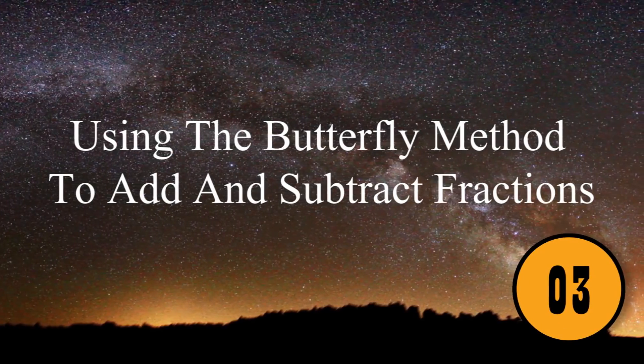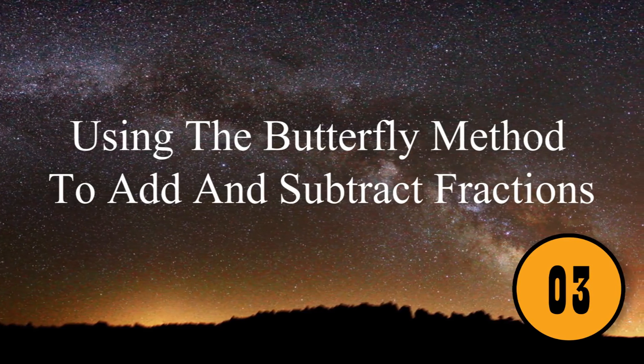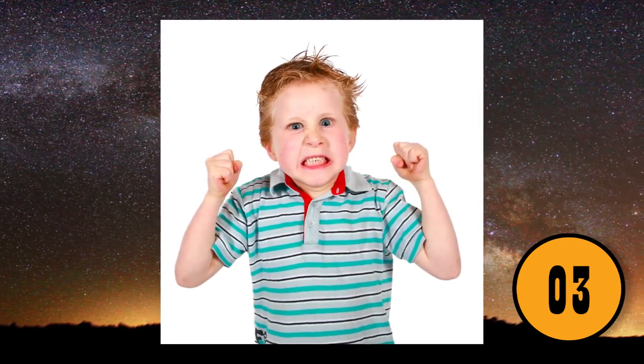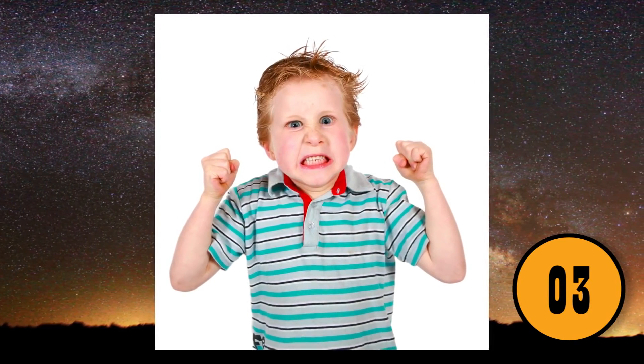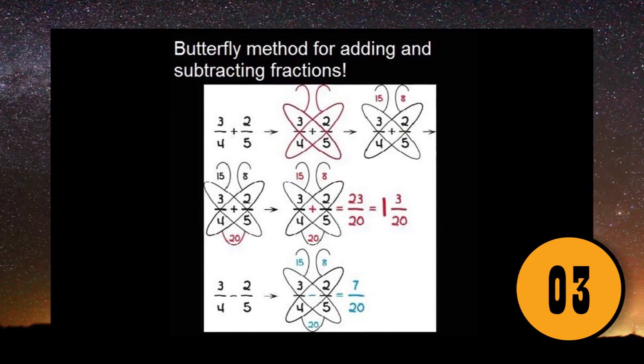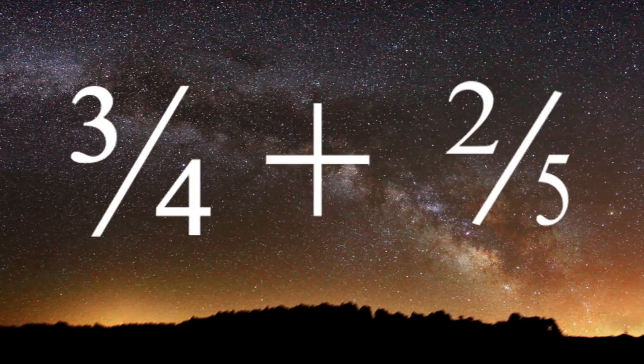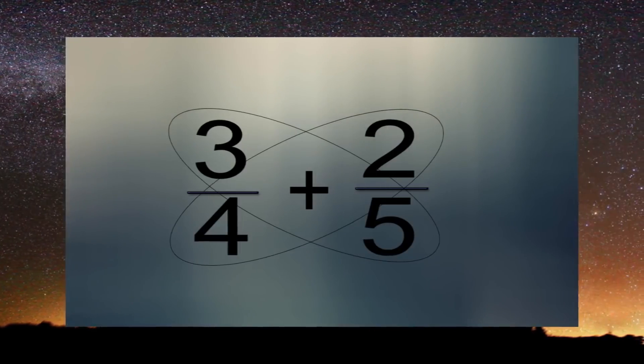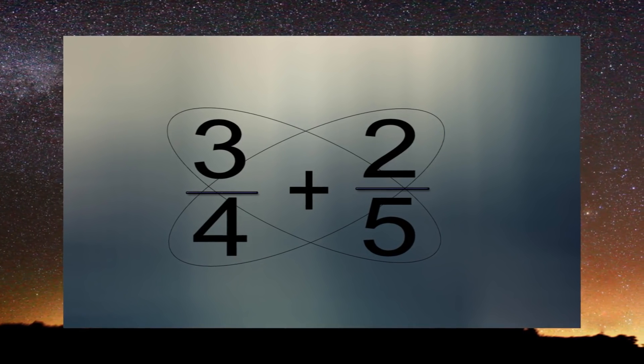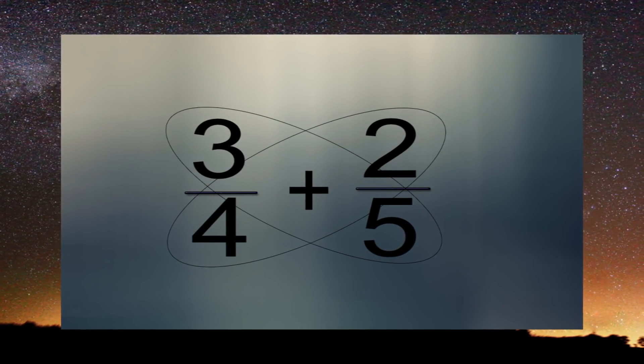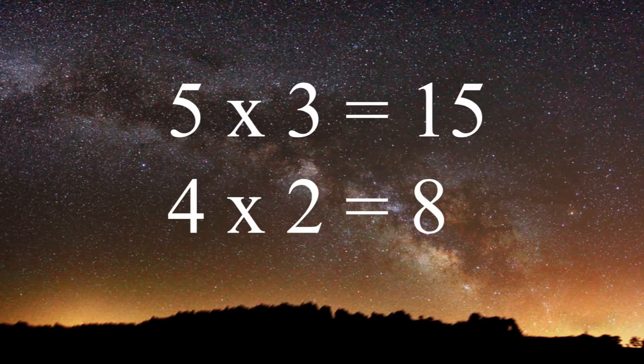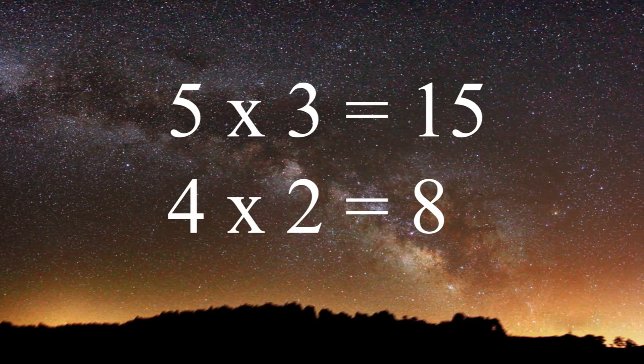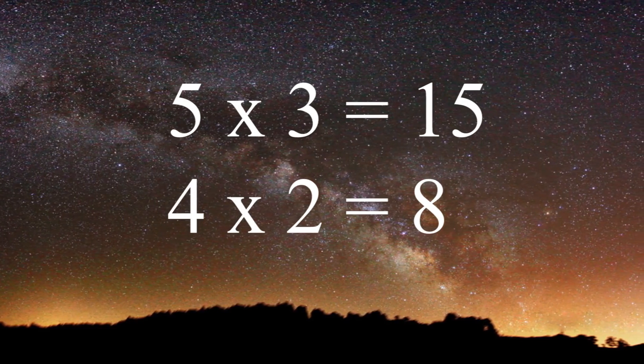Using the Butterfly Method to Add and Subtract Fractions. Adding and subtracting fractions can be difficult if the denominators aren't the same. Luckily, the butterfly method can help. If you're trying to add three-fourths plus two-fifths, you would circle the numbers diagonally, so the 3 and the 5 would be circled and the 2 and the 4 would be circled. Next, multiply the numbers that you circled. 5 times 3 equals 15 and 4 times 2 equals 8.